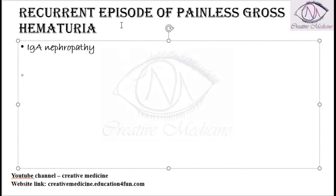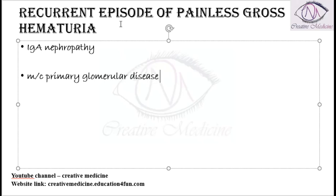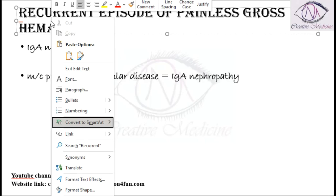If you were asked what is the most common primary glomerular disease, the answer is IgA nephropathy.